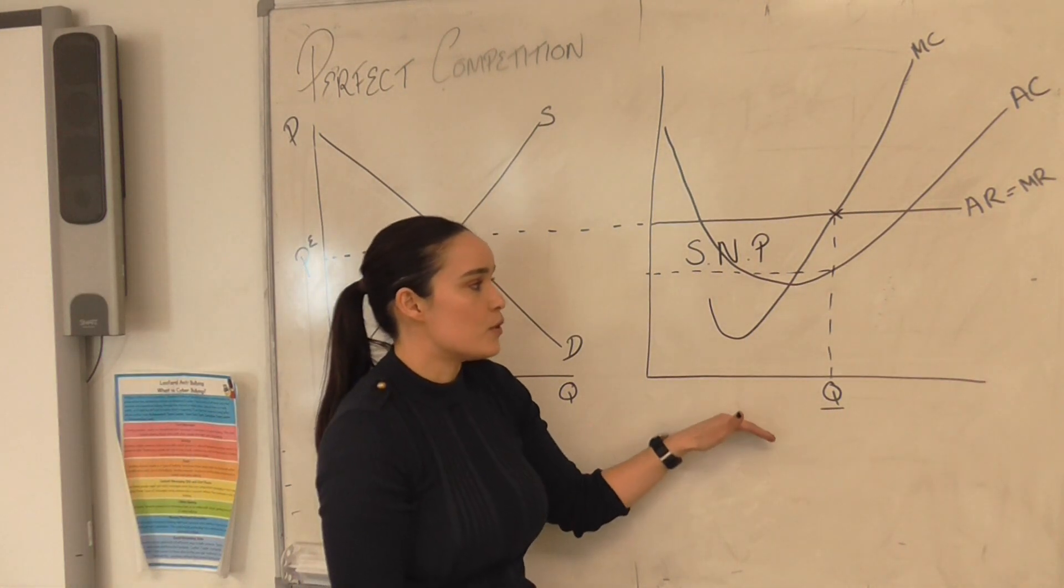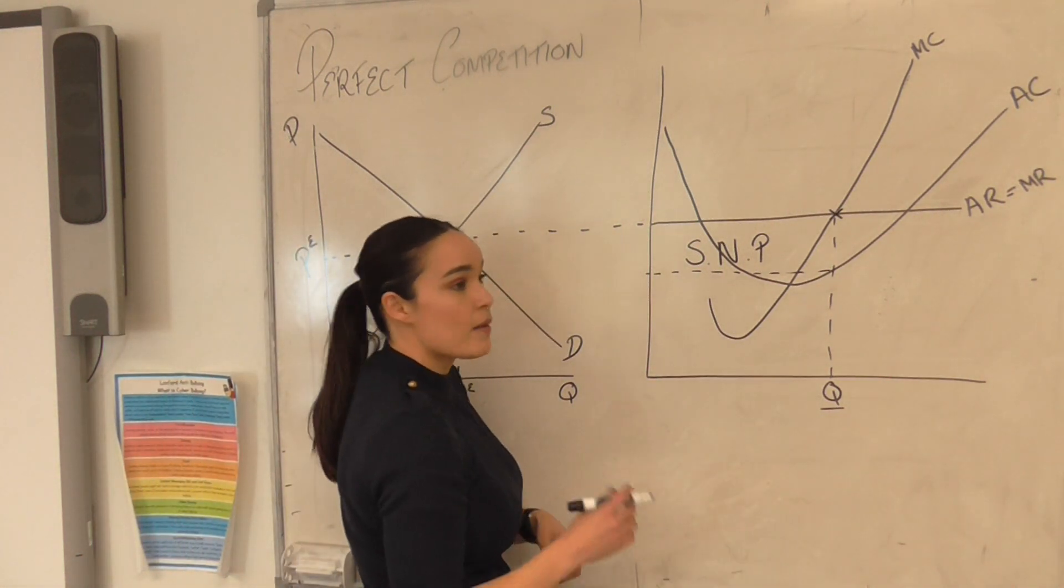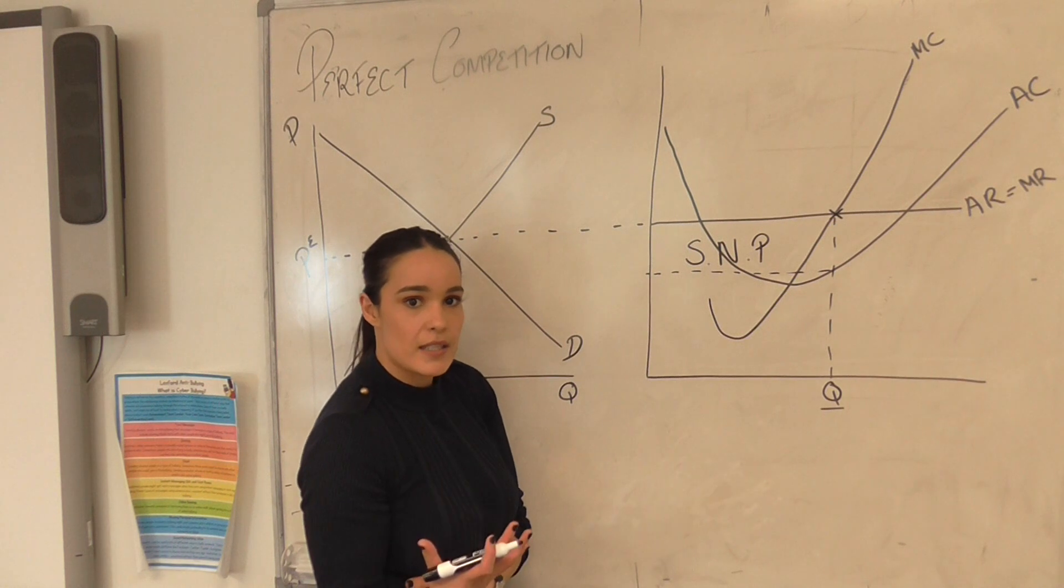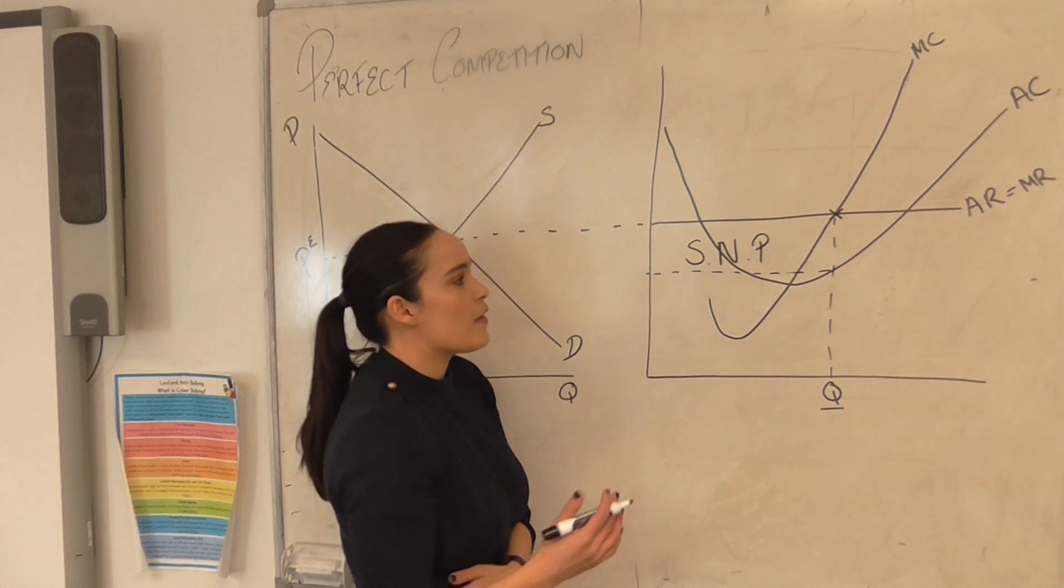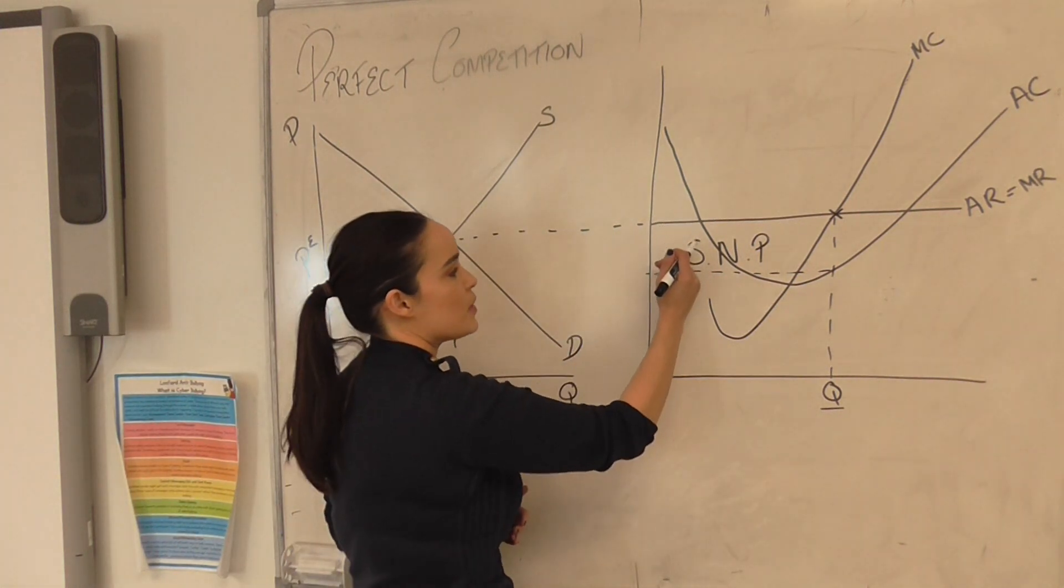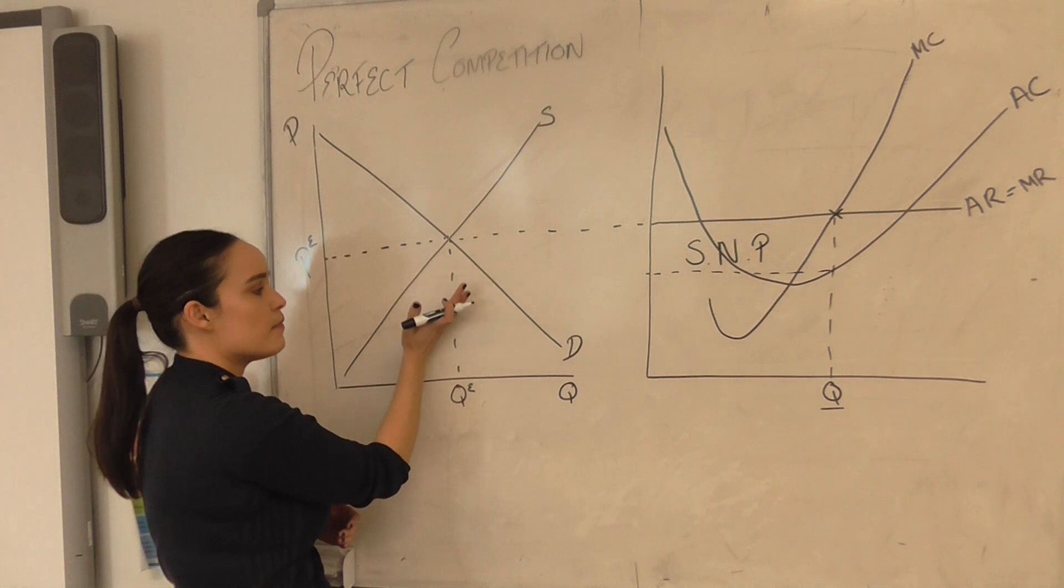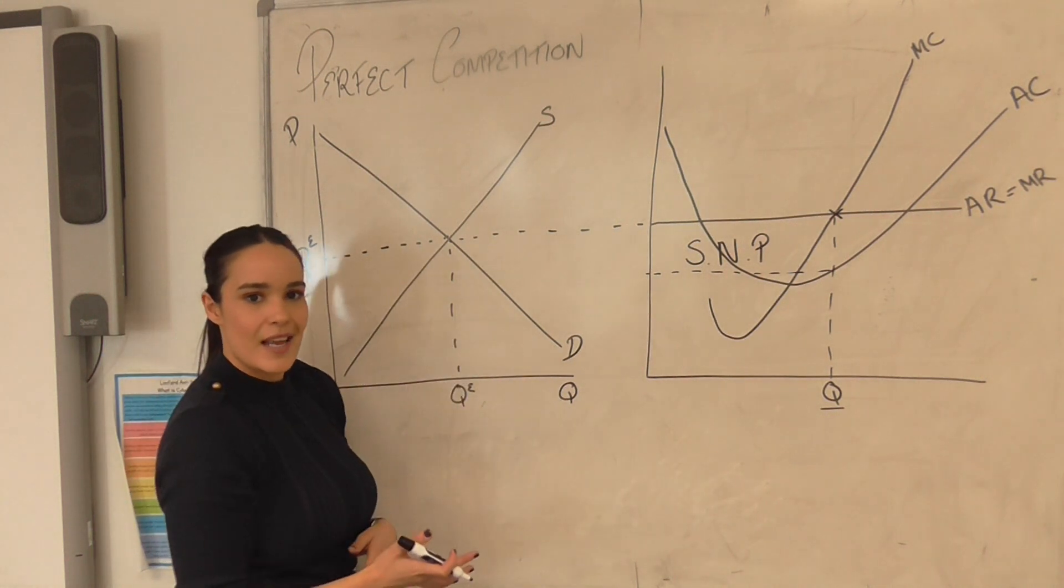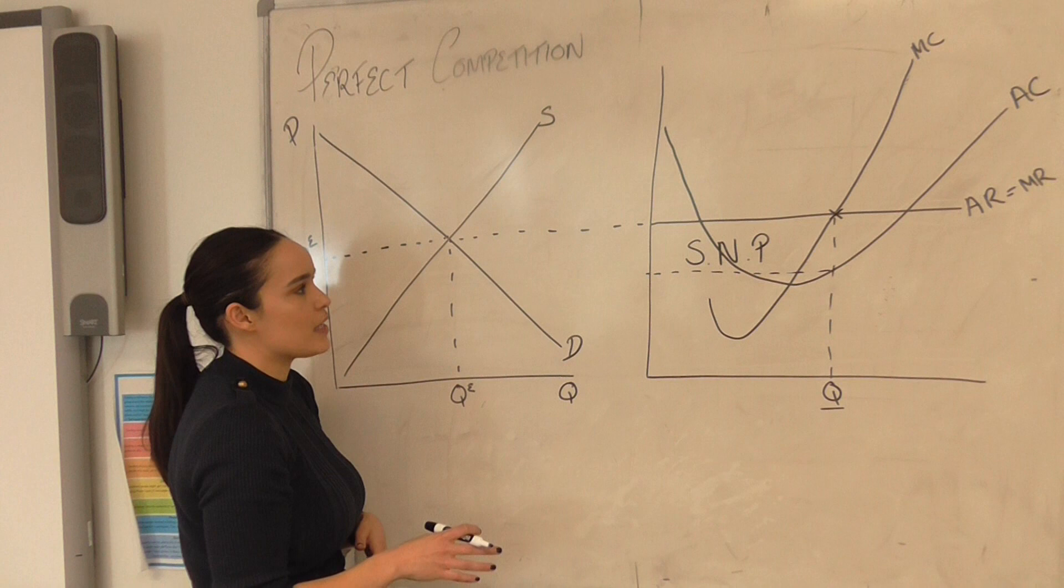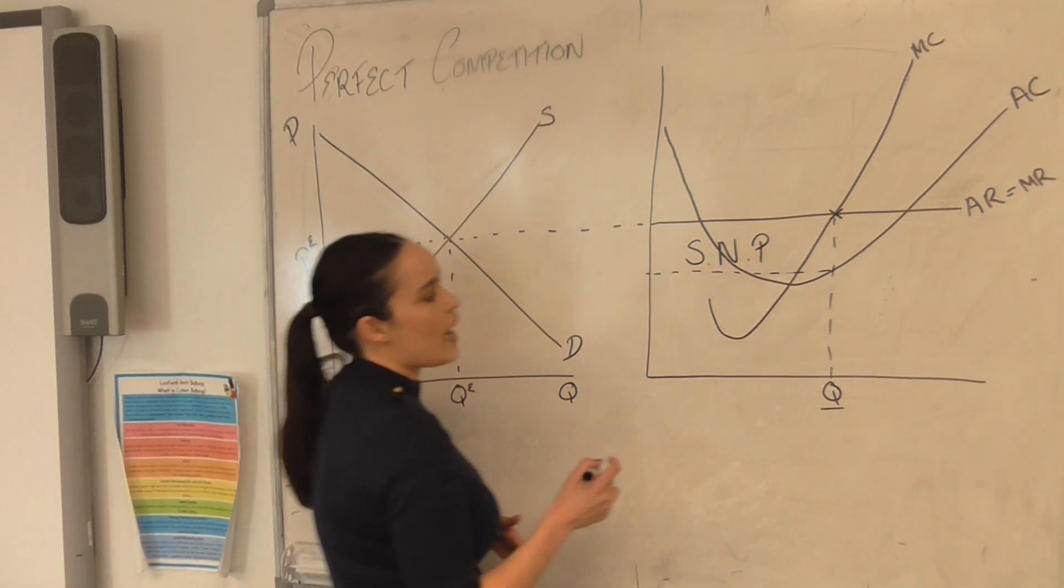So over time we have so many individuals coming into the market that the firm is actually going to make normal profit. So we know that normal profit, the firm will still be profit maximizing as their main objective, but as the firm AR and MR moves down, and the firm's AR and MR will move down as the price equilibrium moves down because they are price takers, and again if you're not sure what that means just have a look at the previous video that I put up.